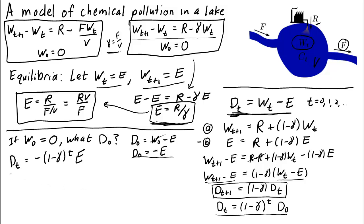Remember, d sub t is the deviation from the equilibrium. But, of course, we care about the actual chemical waste, w sub t. It's a piece of cake to solve this equation for w sub t. So, w sub t is just d sub t plus e. So, therefore, the amount of chemical in day t must be e plus d sub t, or e minus one minus gamma to the power of t times e. This is our solution.